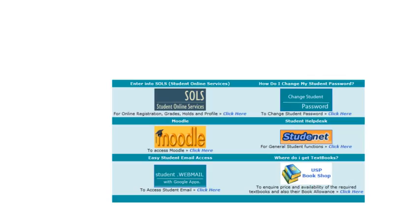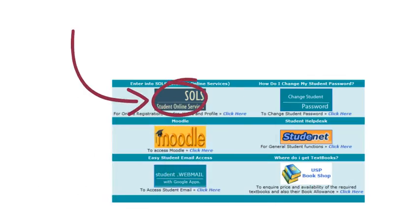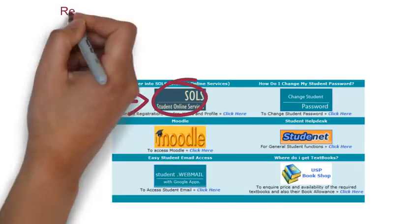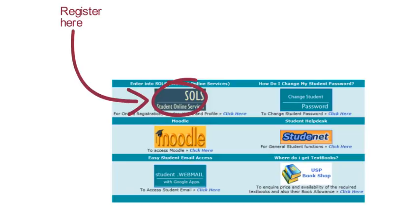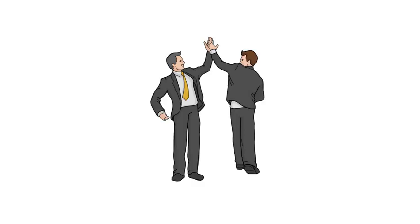Once you have your offer letter, you will be able to log into Student Online Services to register for your courses. If you are not sure which courses to register for, you can go to Student Administrative Services available at any of the campuses or see an Academic Advisor during the orientation week.